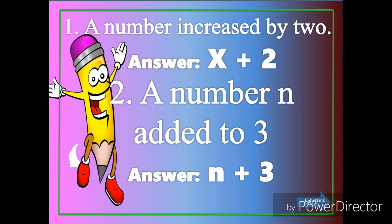We have example number one: a number increased by two. In this example, we're going to use the plus sign because of the word increased by. And then we're going to change the word a number to the variable x. In this example, the answer is x plus 2.